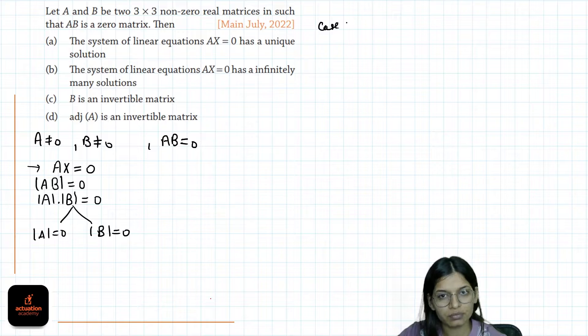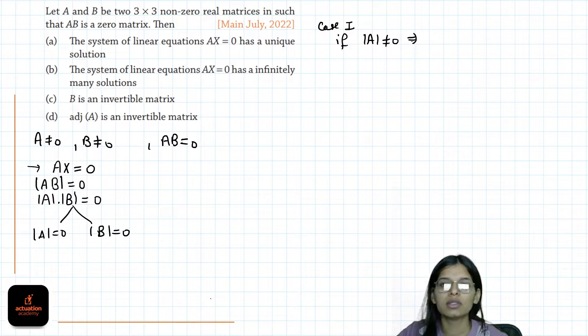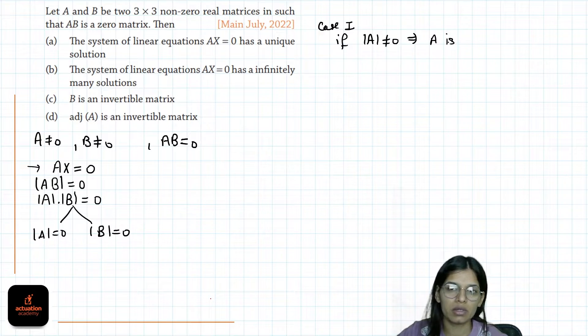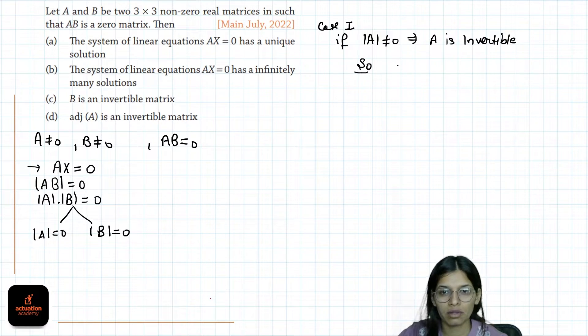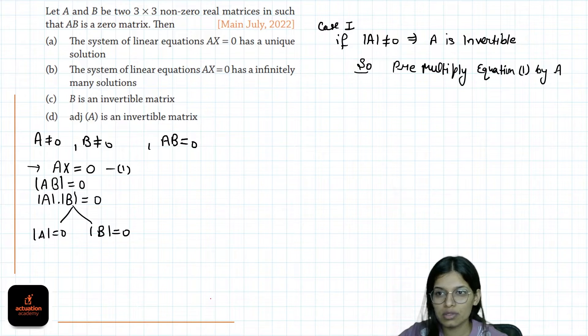Case 1: If determinant of A is non-zero, this implies A is invertible. So pre-multiply equation 1 by A inverse. What we get is A inverse into A into X equals 0.